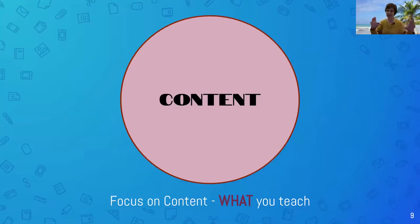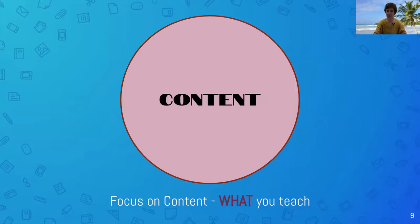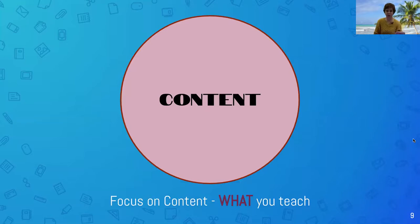You start with C — content. What do you teach? I'm going to start by saying I'm going to be teaching my students opinion writing. What do I want my students to learn? That there are specific elements to opinion writing. I want to make sure I'm focusing on what I'm going to teach. We've got standards, curriculum, and learner objectives to guide us.